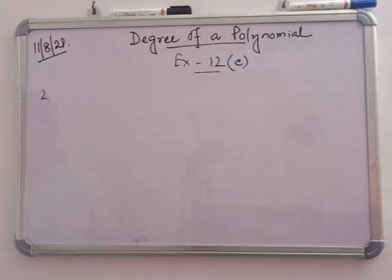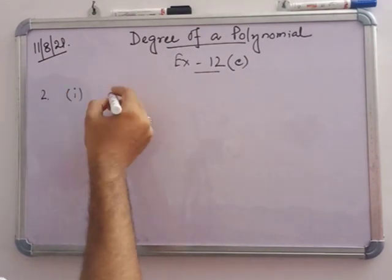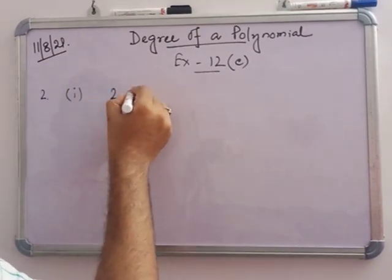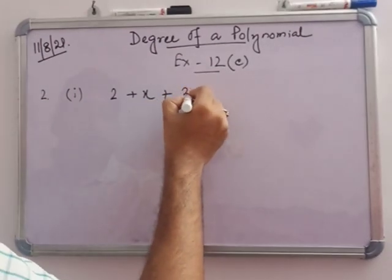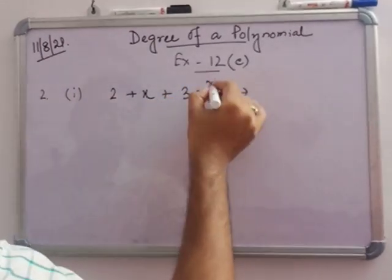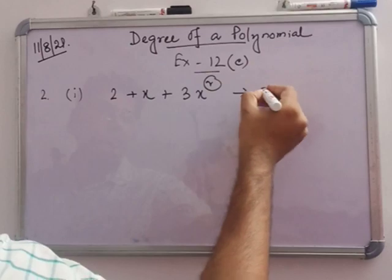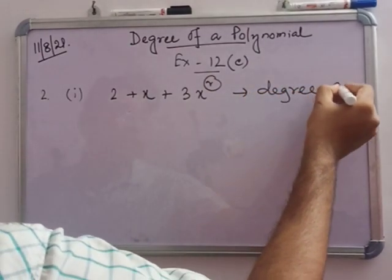In number 2, you have to find the degree of the polynomial. In number 1: 2 plus x plus 3x squared. The highest power is 2, so the degree is 2.